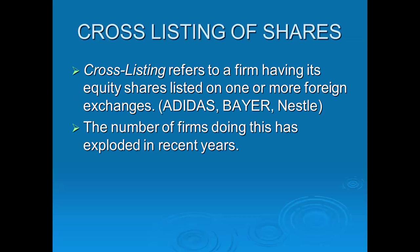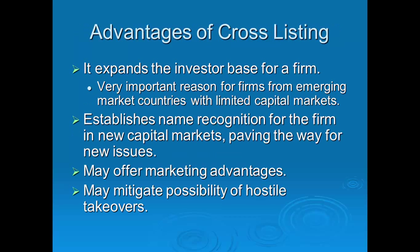Once you look at the markets, you may see a stock listed in more than one exchange. Examples include Adidas, Bayer, Nestle, and Mercedes-Benz. Companies list in different exchanges all over the world for several reasons: to hedge currency risk, to enhance their image with more name recognition and marketing advantages, and to mitigate the possibility of a hostile takeover — a potential acquirer would have to buy the stock not only in Germany but also in the US and other markets, making a takeover more difficult. The number of firms doing this has exploded in recent years.